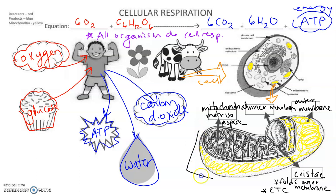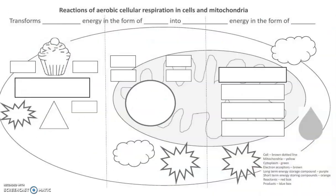Let's take a look at some of the specific parts of aerobic cellular respiration that happens inside of cells, and specifically inside of the mitochondria. For cellular respiration, we're going to transfer chemical energy in the form of glucose — a long-term energy storing compound — into chemical energy in the form of ATP, which is our short-term energy storing compound.